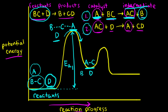Next, we're ready for the second hill, or the second step of our mechanism. In the second step, the intermediate AC reacts with D to form A and CD. The top of the second hill is the transition state for this second step, where the bond between A and C is breaking and at the same time the bond between C and D is forming. The difference in energy between the intermediate and the transition state represents the activation energy for the second step, which we will call EA2.